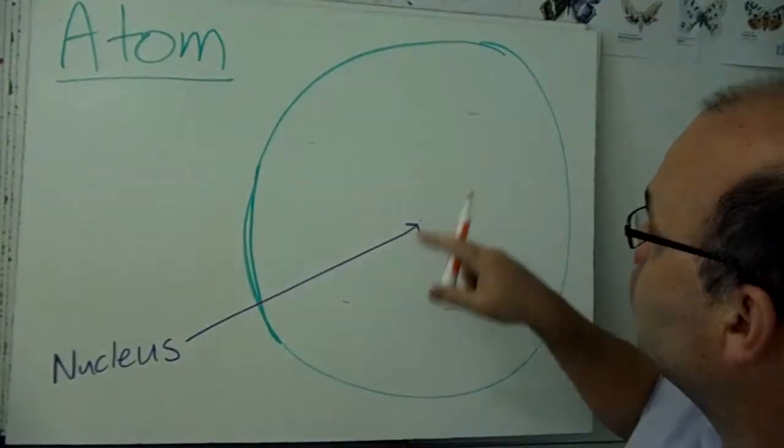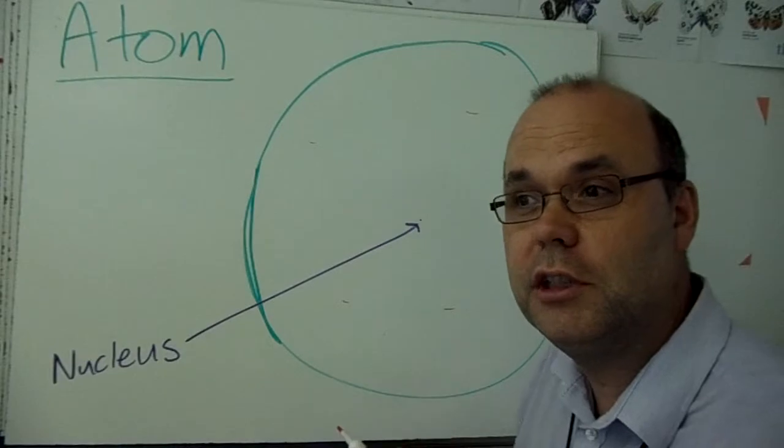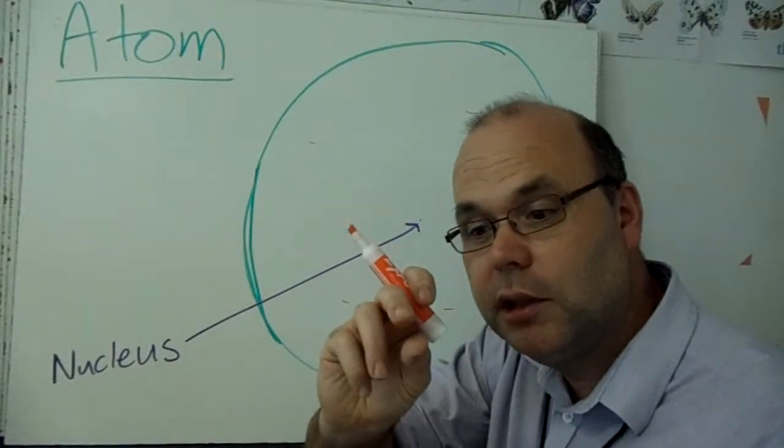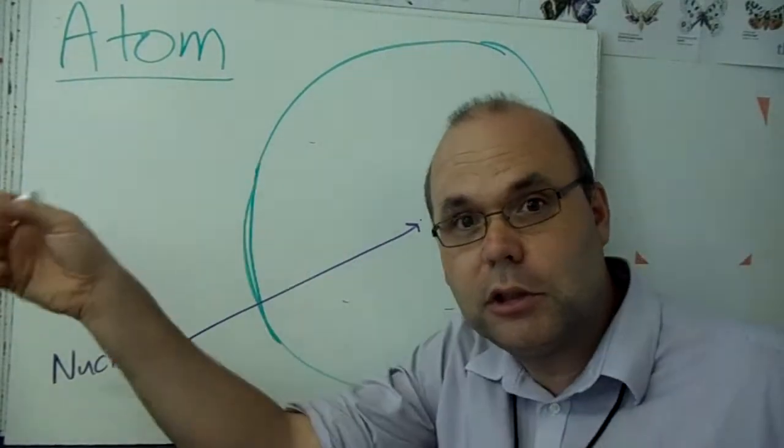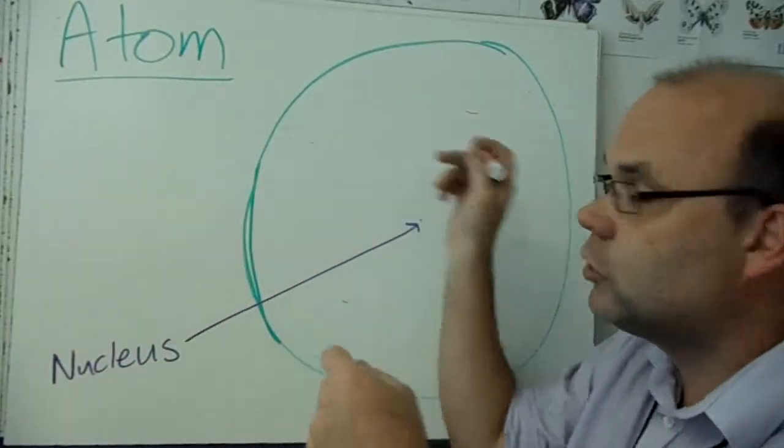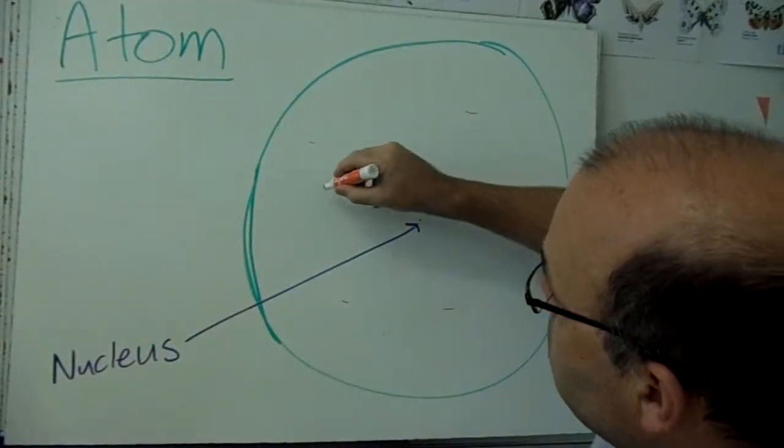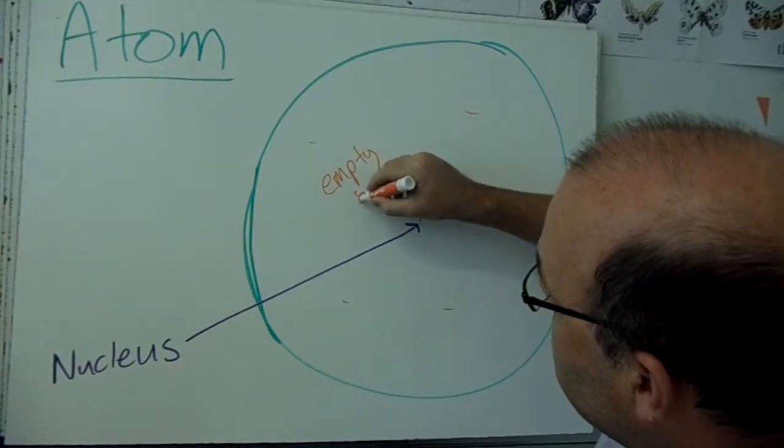Alright, so we've got electrons whizzing around that are so teeny tiny you can't see them. You've got a nucleus this big and the atom is as big as a football stadium. What's the rest of the atom? It's nothing. It's empty space.